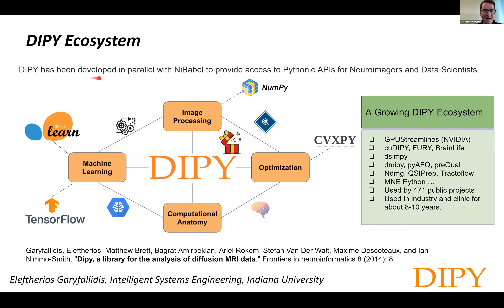DIPY has been developed in parallel with Nibabel. We use Nibabel to provide access to Pythonic APIs for neuroimages and data science. DIPY was created to provide those APIs so that neuroimagers can do their work in an easier fashion and at a lower level. DIPY contains algorithms for image processing, primarily 3D and 4D image processing, and computational anatomy, primarily brain anatomy. It has its own machine learning and optimization methods.